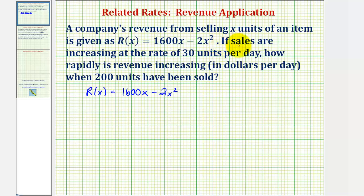We're also told that sales are increasing at a rate of 30 units per day, where x is the number of items being sold. This tells us that dx/dt, the change of x with respect to t, equals 30 units per day.